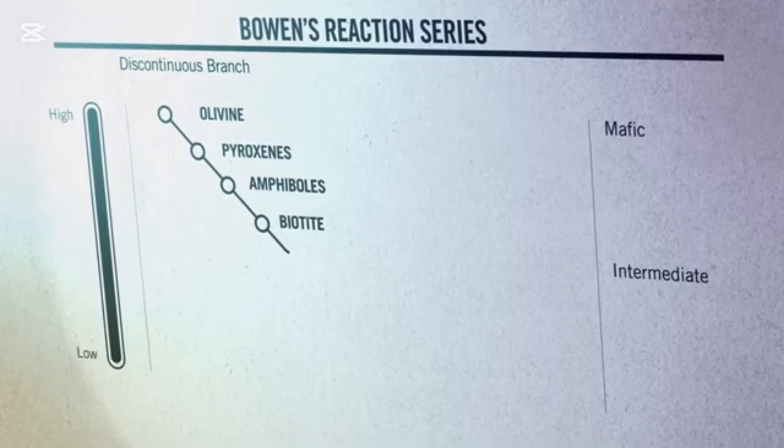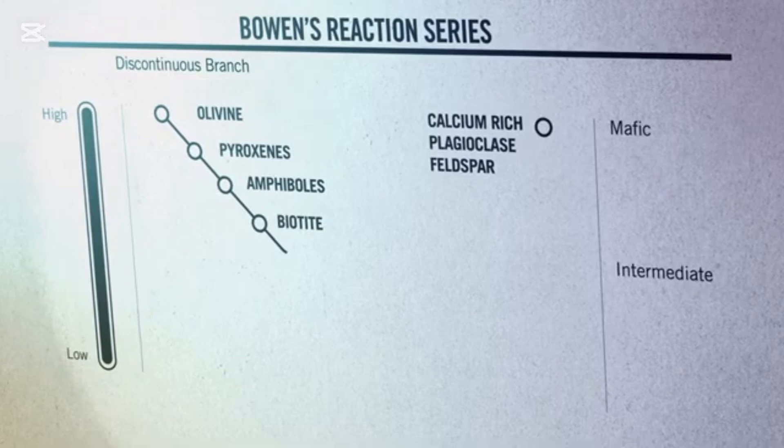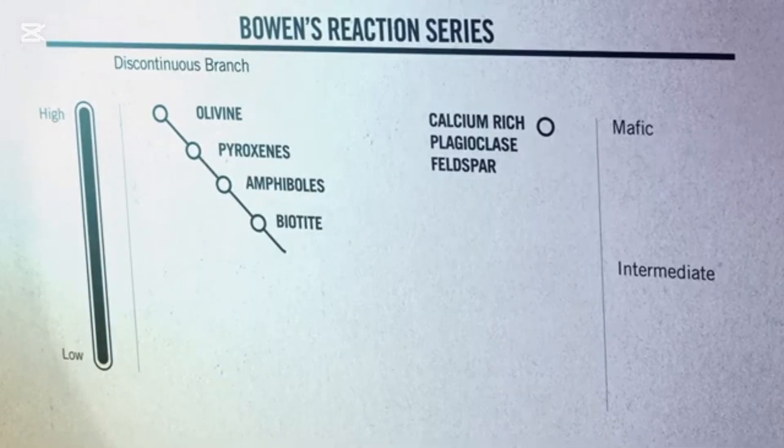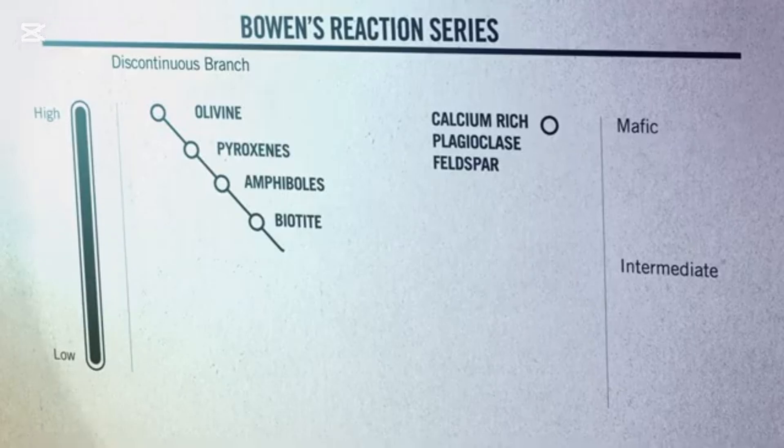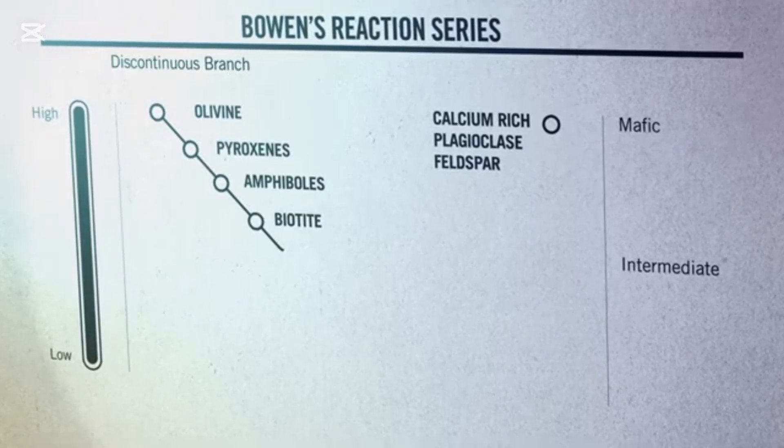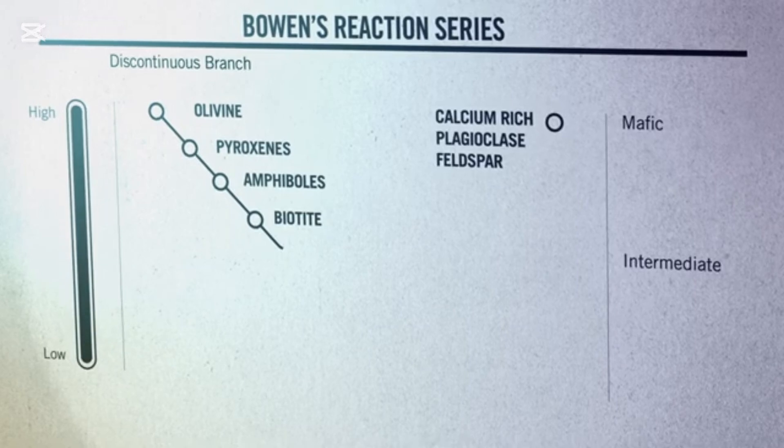While mafic and intermediate minerals form in the discontinuous branch, another mineral, plagioclase feldspar, forms as well, in what is known as the continuous branch. Similar to the discontinuous branch, as temperatures cool, plagioclase changes its elemental composition in a solid solution series that incorporates more calcium into its crystal structure at high temperatures.